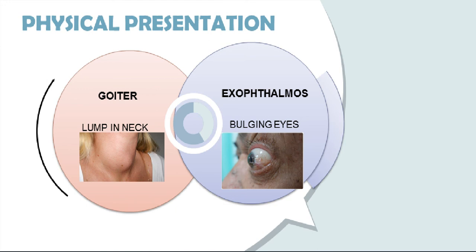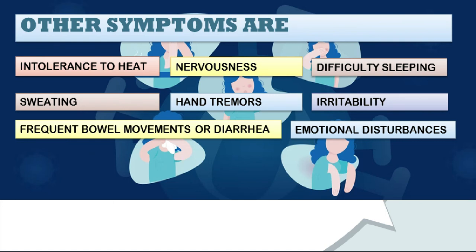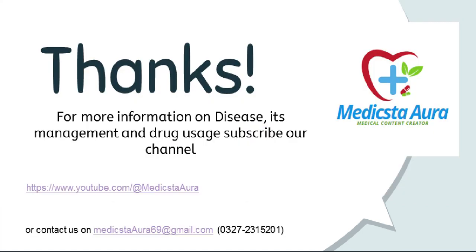Physical presentation of hyperthyroidism is associated with goiter and exophthalmos. Goiter is the lumpy tissue in the neck which is due to hyperthyroidism, while exophthalmos is the condition of bulging eyes which is a hallmark sign of Graves' disease. Other symptoms that can be observed in patients are intolerance to heat, nervousness, difficulty sleeping, sweating, hand tremors, irritability, frequent bowel movements or diarrhea, and emotional disturbance or stress.